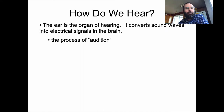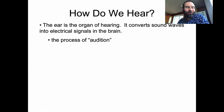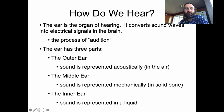How do we hear? The ear is the organ of hearing — it converts sound waves into electrical signals in the brain. This process is called audition. The main point here is the idea of conversion of sound waves into different forms, ultimately into the electrical signals we process neurologically. Before we get there, sound waves have to go through three different parts of the ear. The first part encountered is the outer ear, where sound is represented acoustically in the air, sort of as we normally think about it.